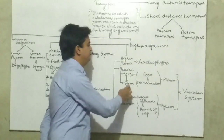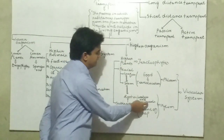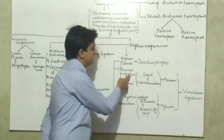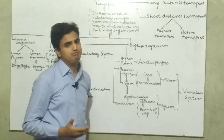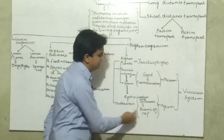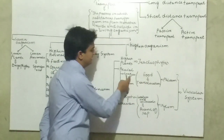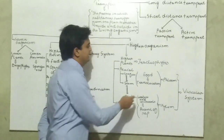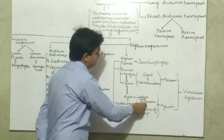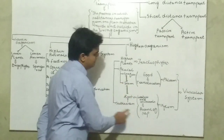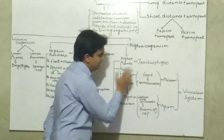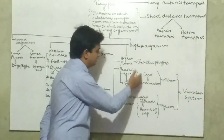Higher plants کے اندر دو قسم کی transport ہوتی ہے: ایک water اور minerals کی transport — root سے stem تک، stem سے leaf تک، جو gravitational forces کے خلاف ہوتی ہے، اس process کو ascent of sap کہتے ہیں۔ دوسری food کی transport — leaf سے stem تک، stem سے root تک، اس process کو translocation کہتے ہیں۔